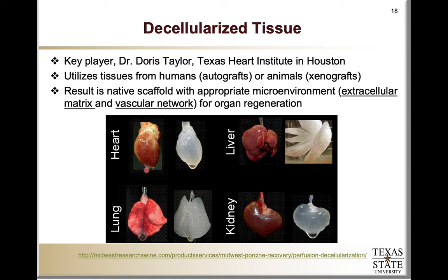Here we see some examples of the tissues that have been successfully decellularized, for example heart, liver, lung, and kidney. Potentially this technique could be utilized for many types of tissues, where basically we are leaving a scaffold that has the right geometry, the right architecture, the right molecular cues, and the right physical or mechanical characteristics to be able to regenerate an organ.